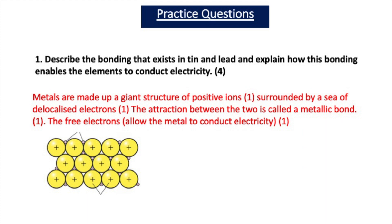Practice question: describe the bonding in tin and lead and explain how this bonding enables the elements to conduct electricity. The bonding in tin and lead is metallic. Metals are made up of a giant structure of positive ions surrounded by a sea of electrons, and the attraction between the two is called a metallic bond. The free delocalised electrons enable the metal to conduct electricity.